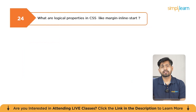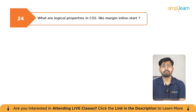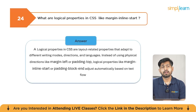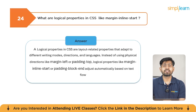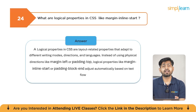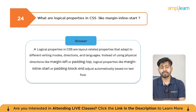What are logical properties in CSS, for example margin-inline-start? Logical properties adapt to the text direction — LTR or RTL. For example, margin-inline-start adjusts the margin at the start of the line, and whether that's left or right depends on the language and direction.